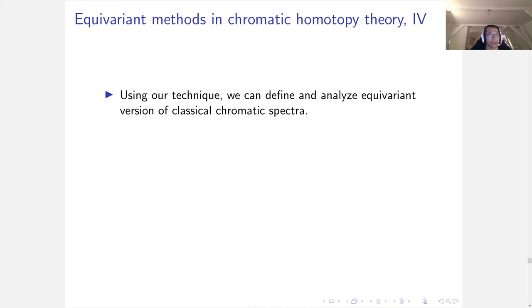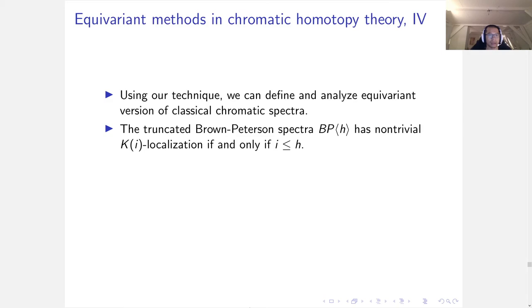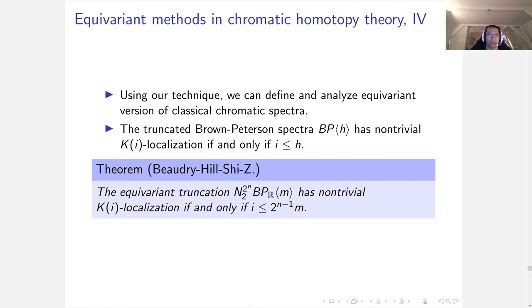Finally, using our technique, we can define and analyze equivariant versions of classical chromatic spectra. The classical truncated Brown-Peterson spectra has nontrivial K(i) localization if and only if i is less than or equal to the height. In our theorem, we generalize to the equivariant version. There are equivariant truncations of the norm of BP_R and they have nontrivial K(i) localization if and only if i is less than or equal to 2^{n-1} times m, which can be understood as the equivariant height.